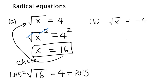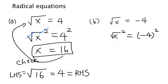Let's look at the second example. We are going to use the same idea and square both sides. When you take the square of the right-hand side, because the number is a negative number, we have to use parentheses. Now we have x on the left and negative 4 squared is positive 16.